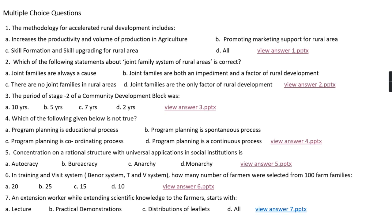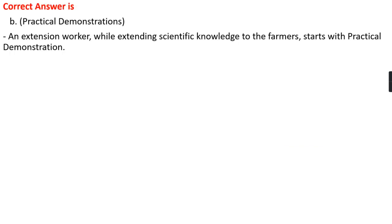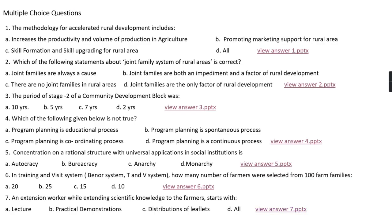Question number seven: An extension worker while extending scientific knowledge to the farmer starts with option A, lecture; option B, practical demonstration; option C, distribution of leaflet; option D, all. The right answer is option B, that is practical demonstration. An extension worker while extending scientific knowledge to the farmer should start with practical demonstration.